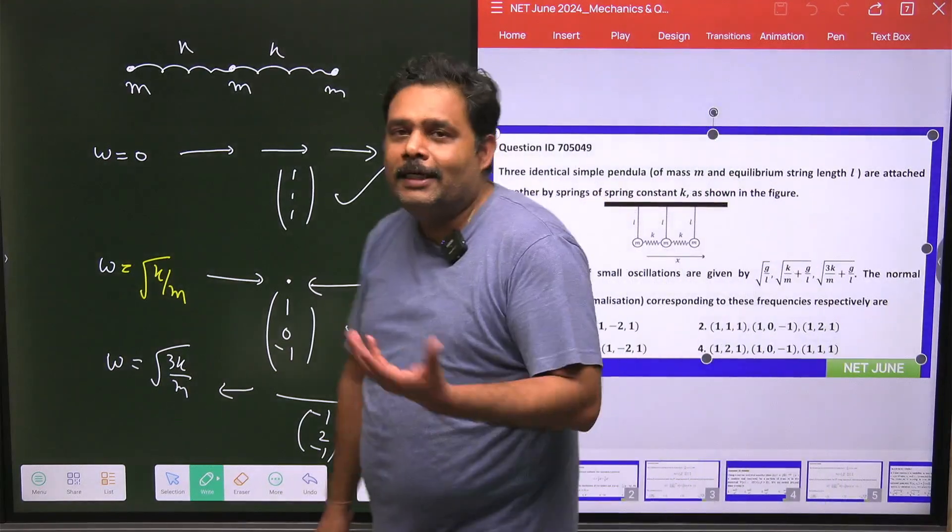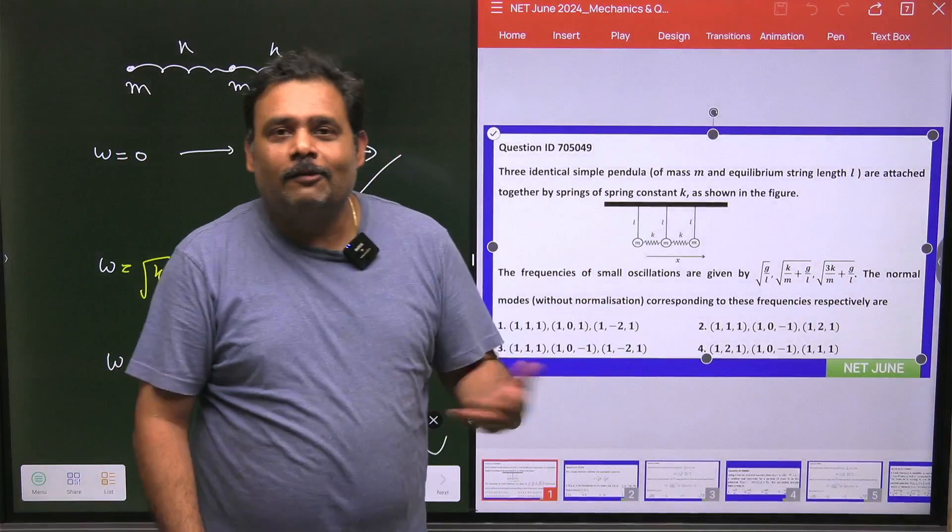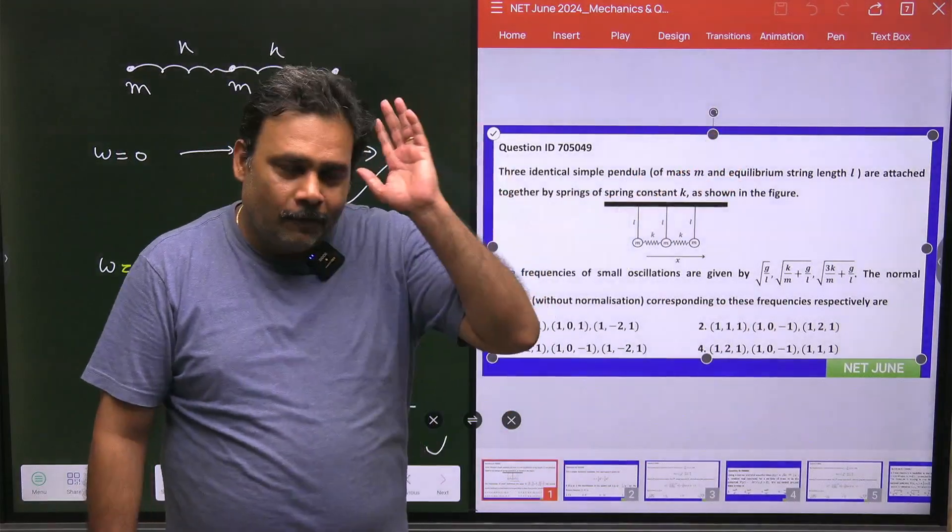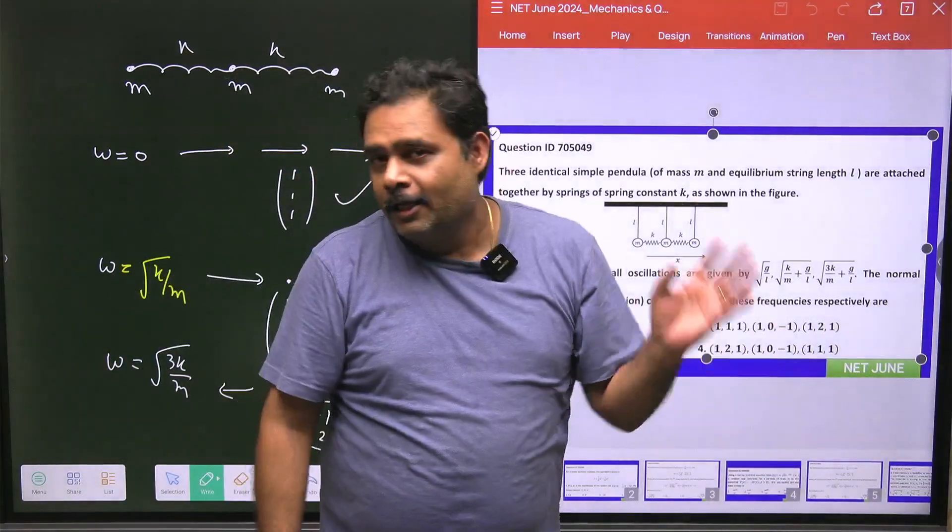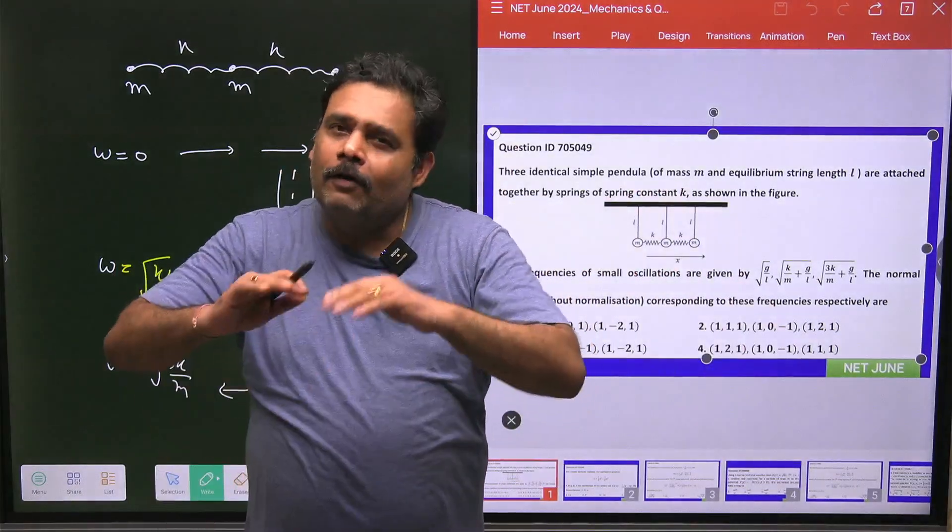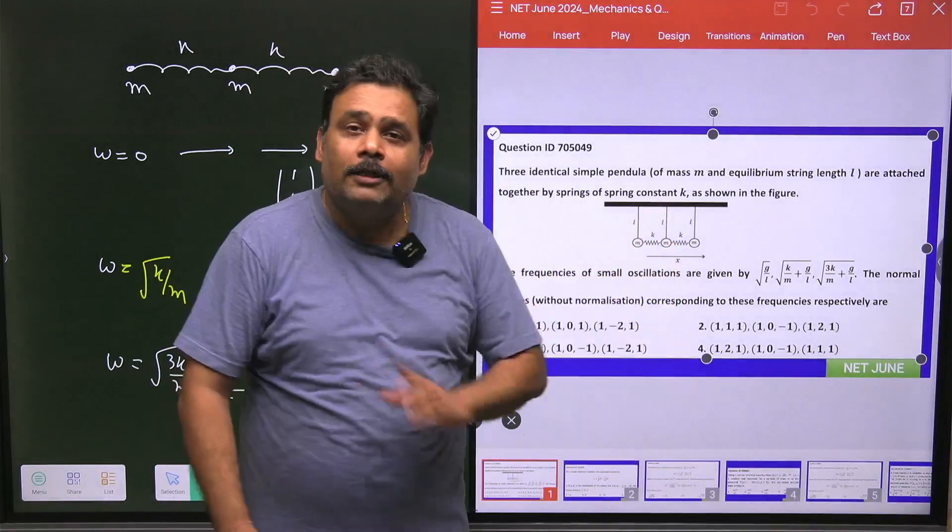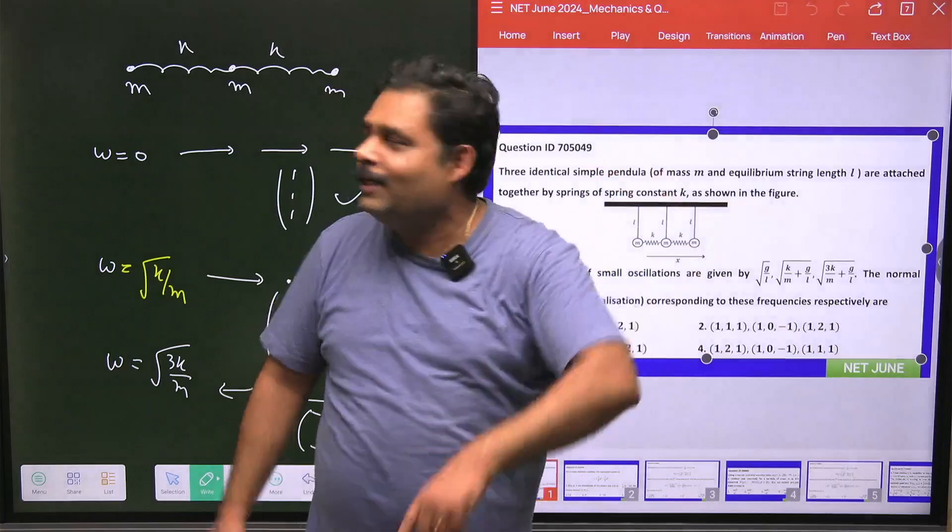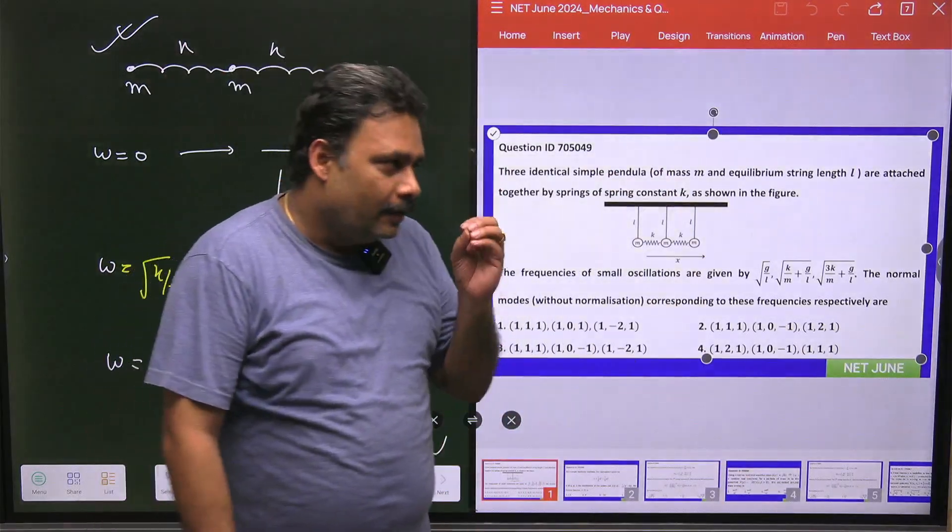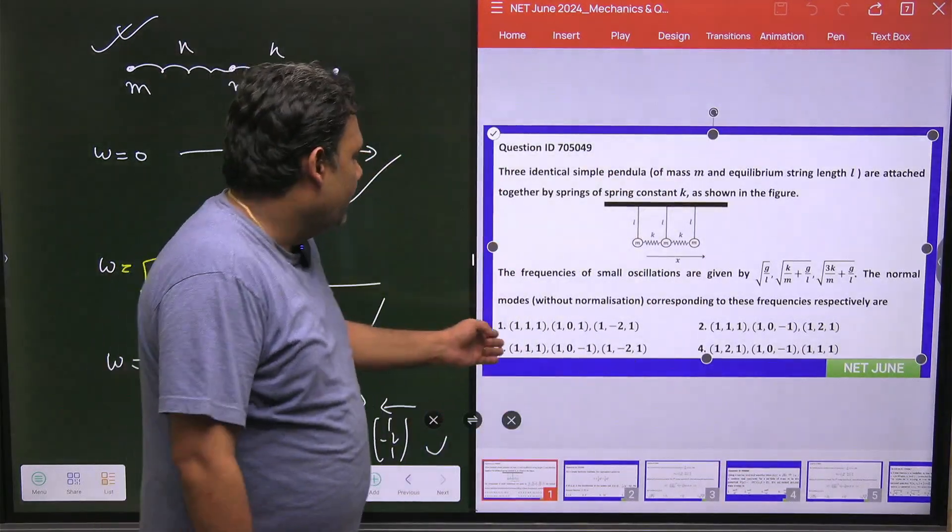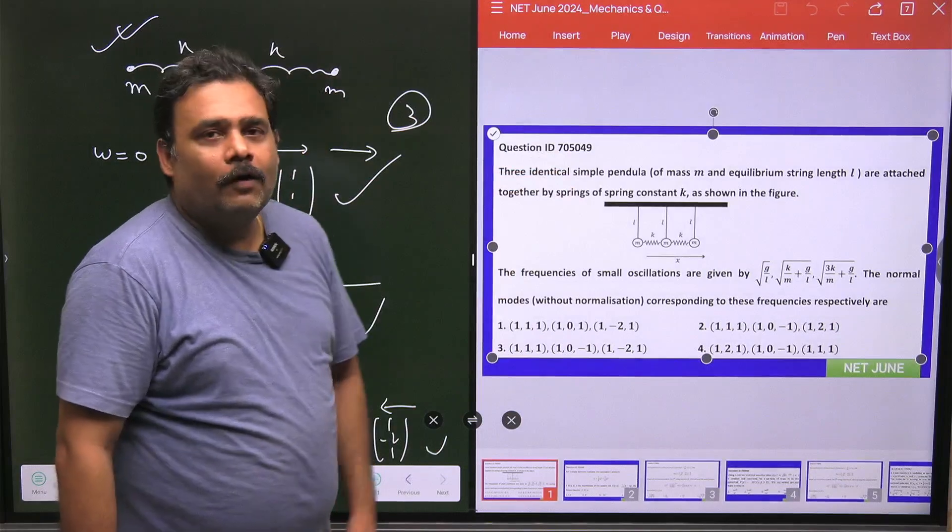So students, this question is very tricky. Why? Because if you are going to solve this question in the examination, it will take a lot of time. But if you will apply the concept of normal modes, because it is just telling you all about the direction—if you are solving it completely, only what is going to change from this ideal system to this system is normal frequency. But normal mode will be exactly of this particular ideal system, and we can have all these answers. So this is one of the very good questions, and you have answer number 3 as the correct answer, and this is question ID 705049. Thank you.